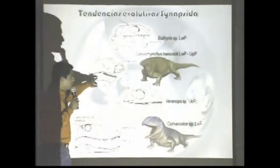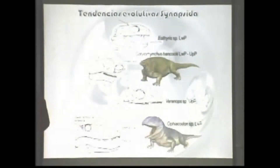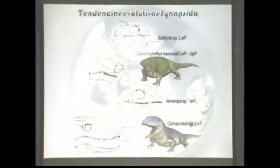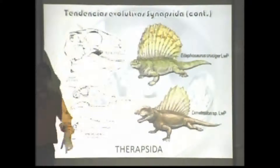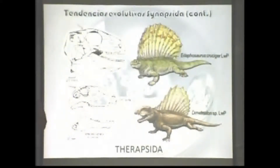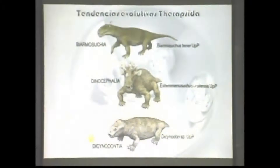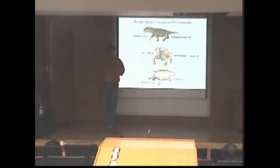Las tendencias evolutivas de los sinápsidos fueron en el siguiente sentido: uno de los primeros grupos se especializó en una dieta a base de vegetales, mientras que los grupos subsecuentes se especializaron en una dieta carnívora. Un siguiente grupo se especializó nuevamente para el consumo de vegetales, y otro tenía las espinas neurales de las vértebras alargadas para formar una vela que servía como panel solar para calentar o enfriar al animal eficientemente. Otros grupos dieron origen a formas extrañas como los dinocéfalos y los disinodontidos, que tenían solo dos caninos para extraer tubérculos del suelo.